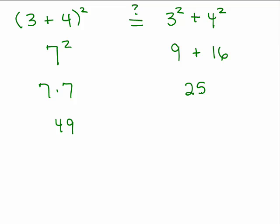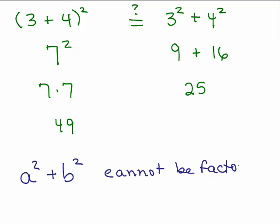So here's the main thing: if you've got a squared plus b squared and you want to factor it, you can't. A squared plus b squared cannot be factored. It would be convenient if it was just a plus b quantity squared, but it's not.